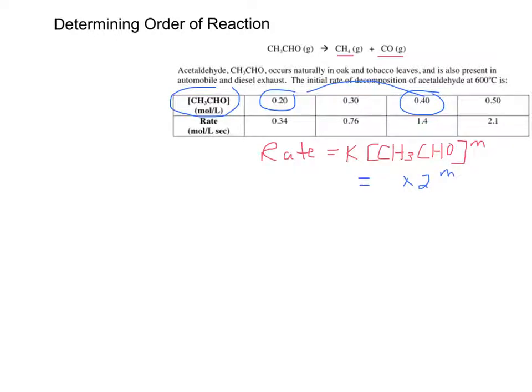And I want to look and see what happens to the rate at the same time. Well, from here to here, I don't know if you can tell by looking, but that's actually quadrupling. 1.4 divided by 0.34 is actually 4. So at the same time, when the concentration doubles, the rate quadruples.